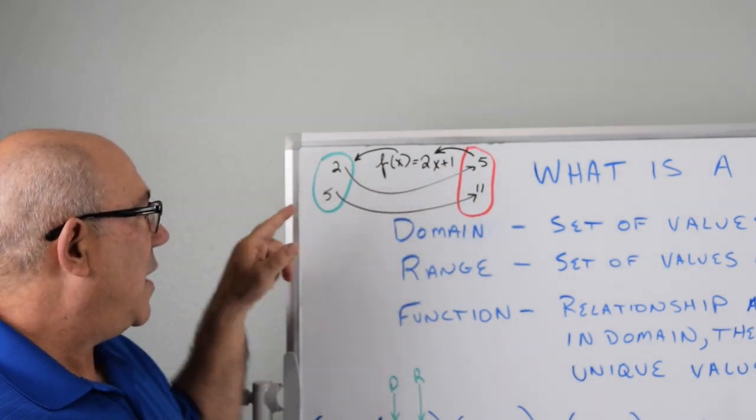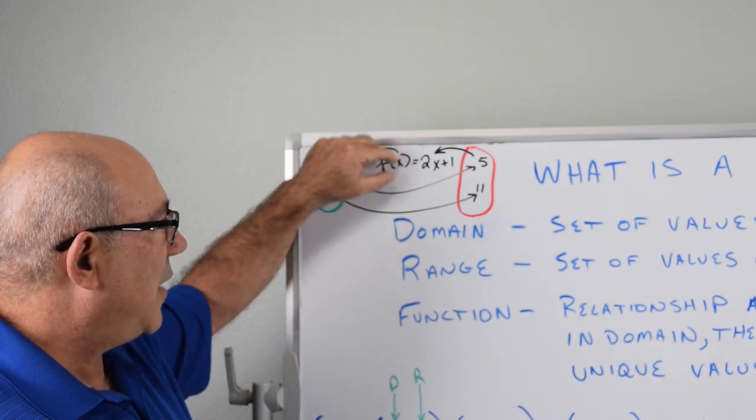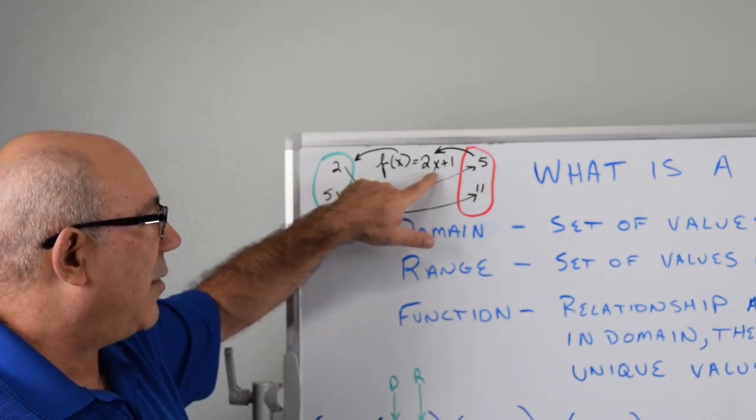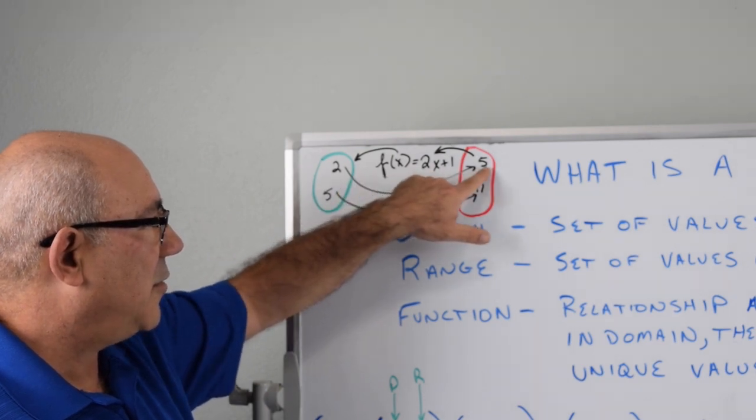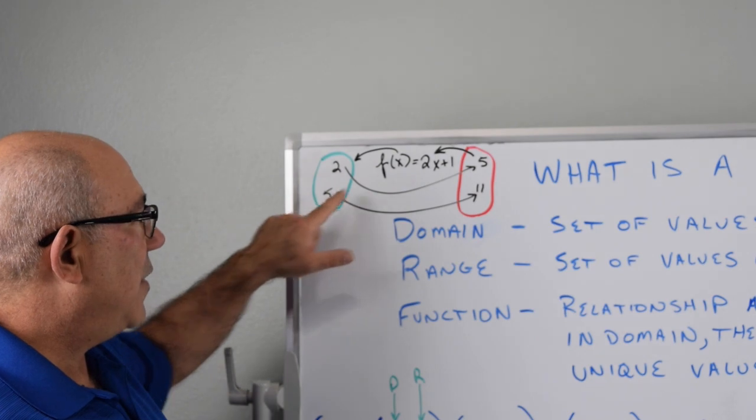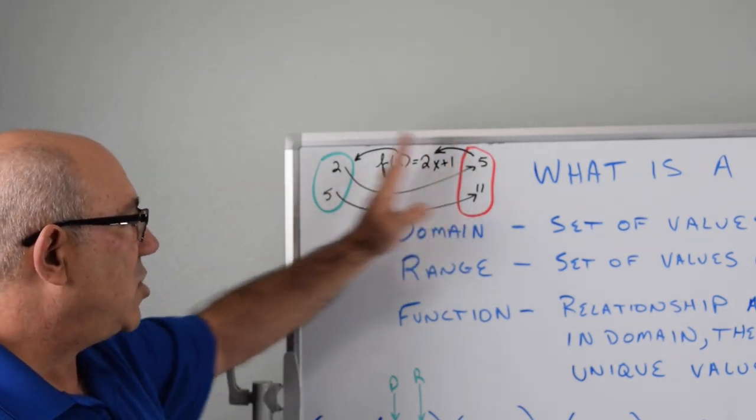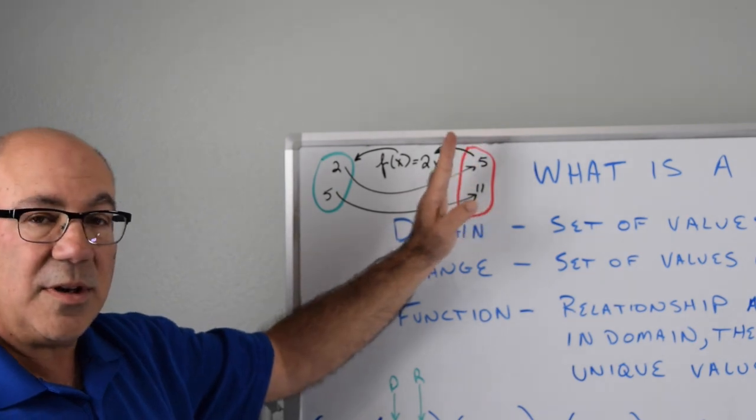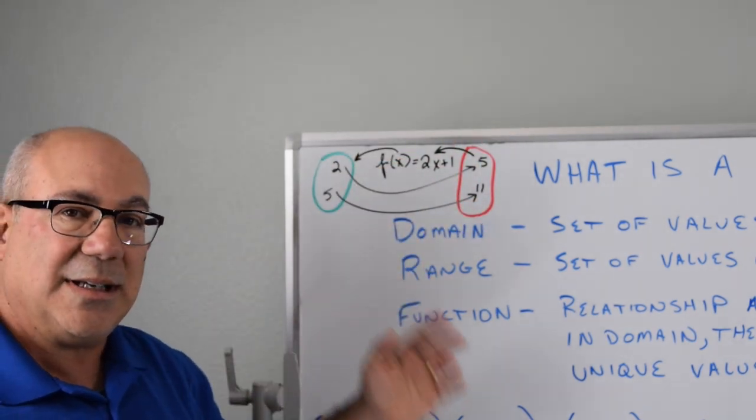And so if we take one of these values and stick it in the f of x as x equals 2, what comes out of the function is 2x plus 1, which would be 5. We put 5 in here, we come out with 11. And so this relationship here is a function. What we want to see is, is it a true function or is it not?